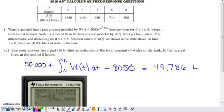In part C, use the answer from part B to find an estimate for the total amount of water in the tank to the nearest liter at the end of eight hours. So it's not just how much leaves the tank, that's what we were able to estimate at the conclusion of part B. That's indicated right here.